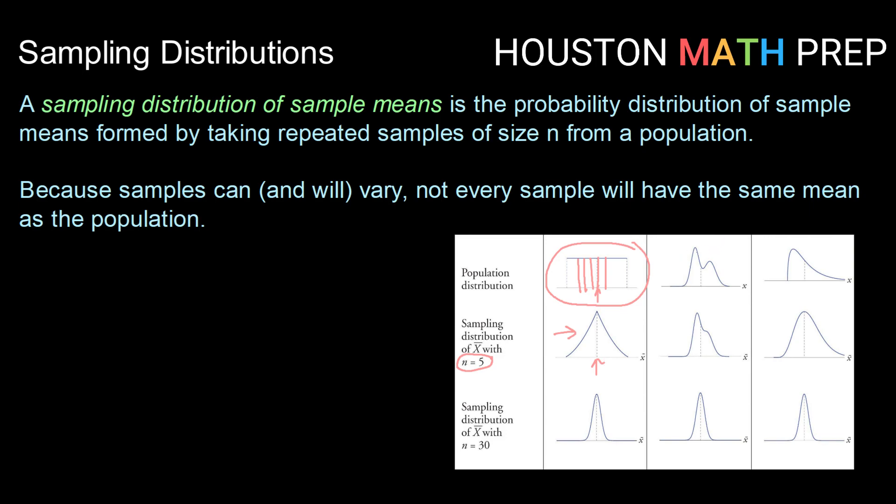Now if we took a different distribution, let's say this kind of bimodal, funky looking distribution here, if we did the same thing, if we took a bunch of samples of size 5 and we calculated the mean of each of those samples and plotted those, then here's kind of an example of what our distribution would look like. We notice that the mean of the distributions is about the same, but we're starting to get a little less bimodal, so a little less funky shaped, a little more centered around that mean.